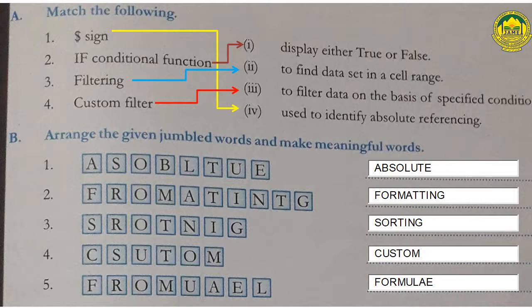Match the following. Number one: dollar sign - answer four: used to identify absolute referencing. Number two: IF conditional function - answer one: displays either true or false.